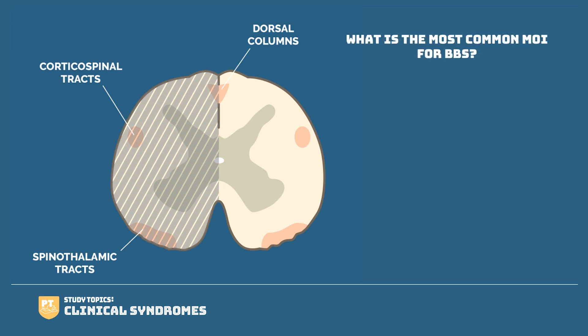What is the most common mechanism of injury for Brown-Sécard syndrome? It's often a penetrating injury. This is a traumatic neurolateral disorder resulting from compression or injury to one side of the cord — you may see this called a hemisection in a vignette. The most common presentation is through a knife wound.